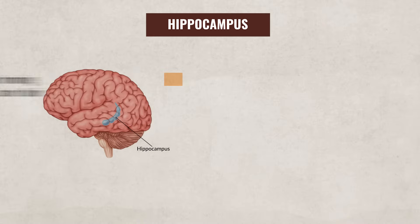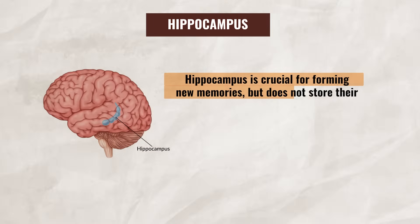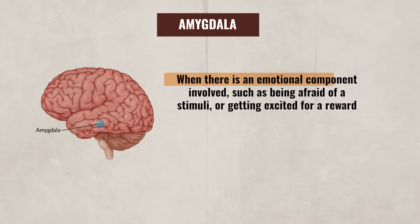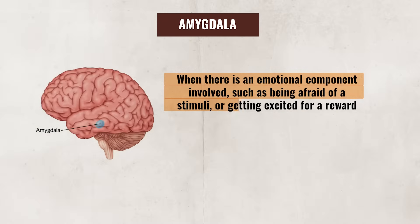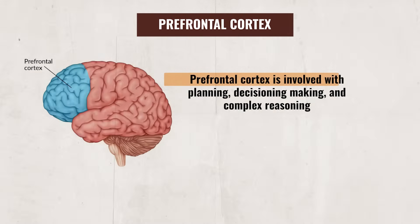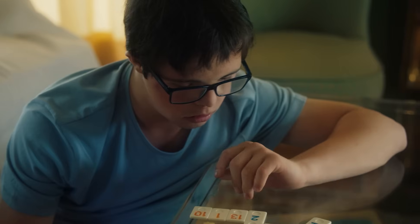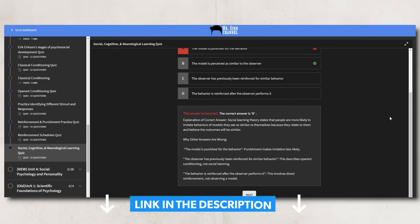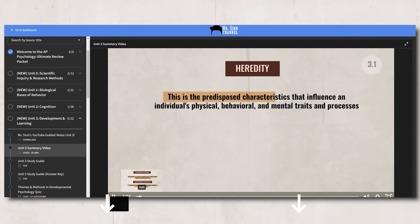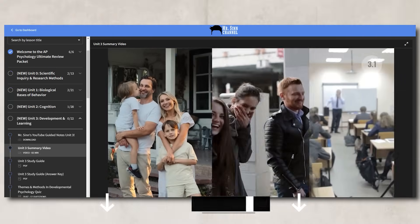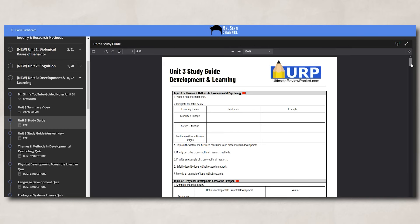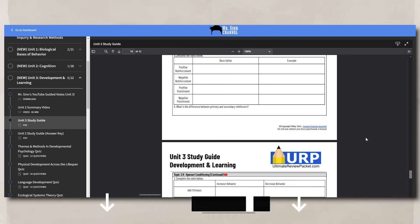Lastly, a couple of brain structures that impact learning: the hippocampus is critical for forming new memories, but remember the memories are not stored there. Then there's the amygdala, which deals with learning when there is an emotional component involved, such as being afraid of a stimulus or getting excited for a reward. And the prefrontal cortex is involved with planning, decision-making, and complex reasoning, which helps an individual problem-solve. If you still feel like you need more help with any of these concepts, head over to the Ultimate Review Packet and check out the practice quizzes on these topics. You'll also want to check out the Unit 3 Summary video, found at the top of Unit 3 in the packet. It covers all Unit 3 information in one video, comes with a study guide, and an answer key so you can check your work — helping you crush your Unit 3 test or the AP exam.